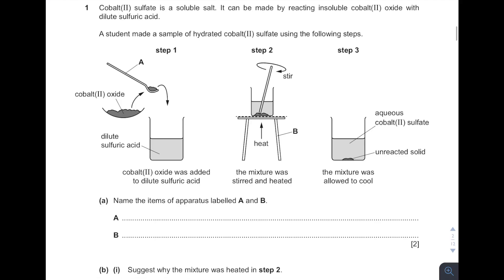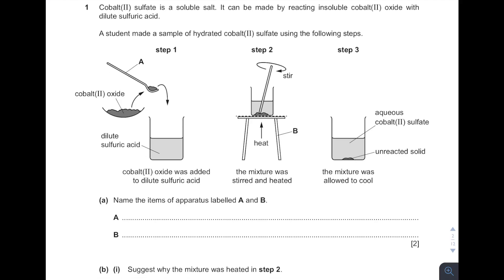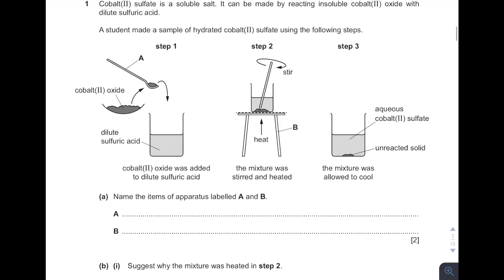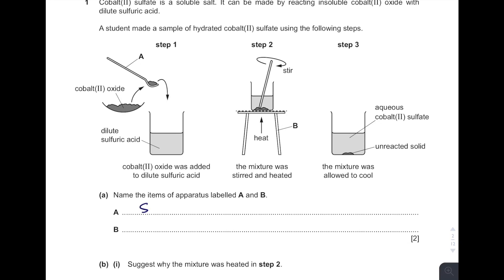First one, name the items of apparatus label A. See, A is metal spoon. Okay, metal spoon is the incorrect answer. Remember again, do not put metal spoon. It has to be spatula. And then B, it is tripod stand.